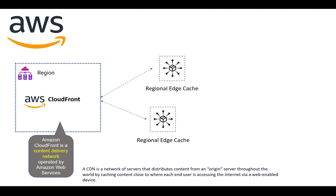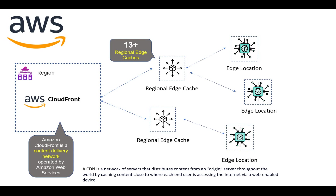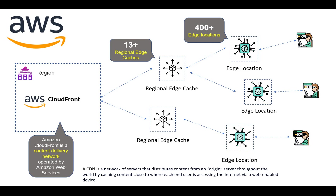CDNs cache content to nearby locations so it can easily be streamed to end-user devices. That's how we come to the concept of edge caches and regional edge caches. AWS CloudFront has regional edge caches — there are around 13 plus regional edge caches as per current statistics — and edge locations. Users can easily access content using these edge locations, and there are around 400 plus edge locations. This is how the overall CDN network looks in the AWS global infrastructure.